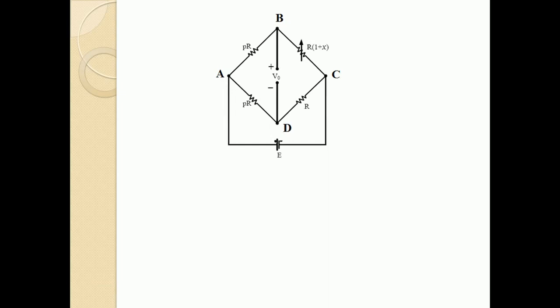In order to obtain the solution, we have marked the points or nodes as A, B, C, and D. For V naught to be maximum, we use the relation: R_AB multiplied by R_AD equals R_BC multiplied by R_CD — that is, adjacent resistances must satisfy this relation. Substituting the given parameters yields rho squared R squared equals R squared times quantity one plus X.